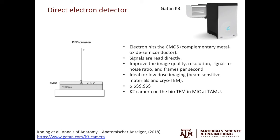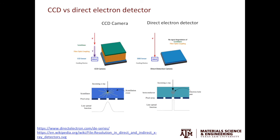The downside of direct electron detectors is that they are very, very expensive. In MIC at Texas A&M University, we have one K2 camera, which is a direct electron detector. To compare CCD and direct electron detectors: signal generation in CCD is a multiple-step process, while in the direct electron detector it's a single-step process. In the CCD camera, because multiple photons are generated and can scatter, you get a degradation in resolution, while in the direct electron detector you don't get such an artifact.